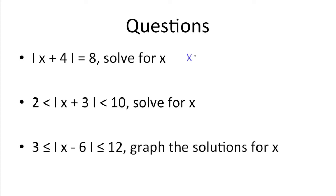The first thing we need to do is just remove the absolute value symbols, and we get x plus 4 is equal to 8. We also need to solve for this equation if we were to put a negative through the absolute value terms, so we get negative x minus 4 is equal to 8.